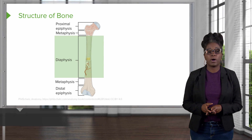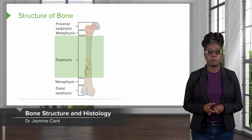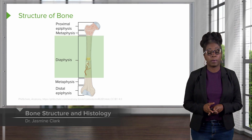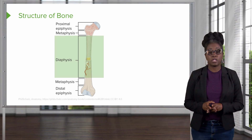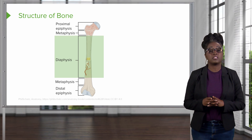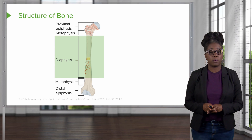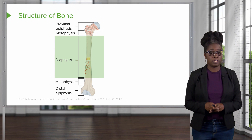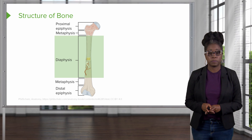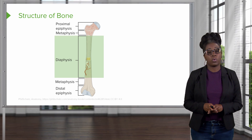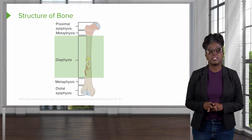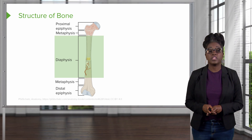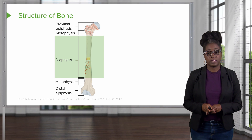The structure of the bone is pretty simple. Here we will talk about the long bone. Please note that this is specific for long bone, and flat bones may not have all of these different structures. In the long bone, you have the shaft or the long part of the bone. This is referred to as the diaphysis.